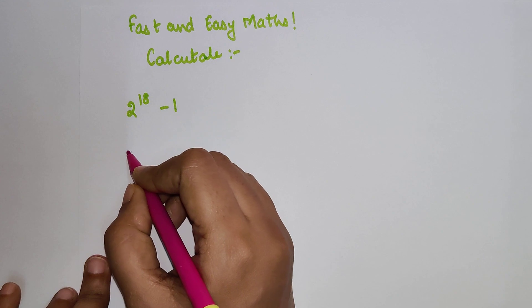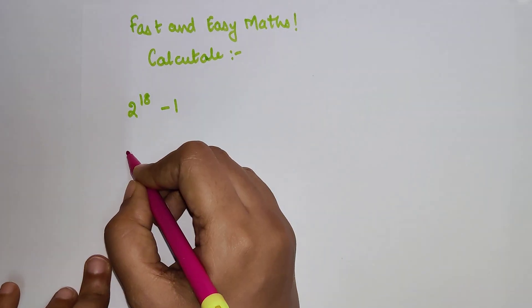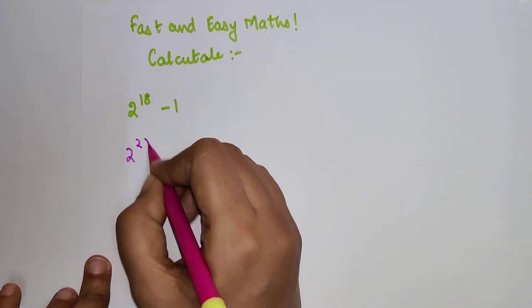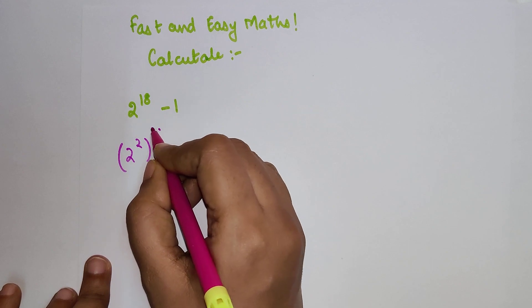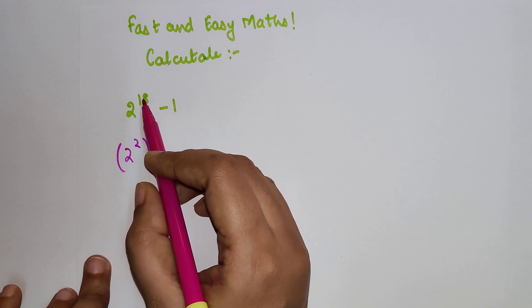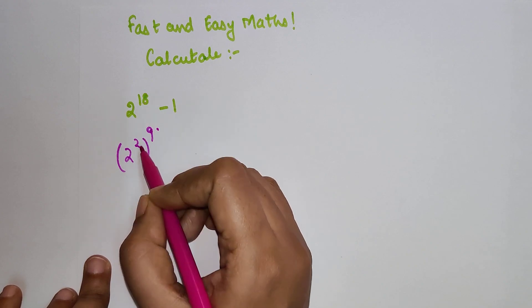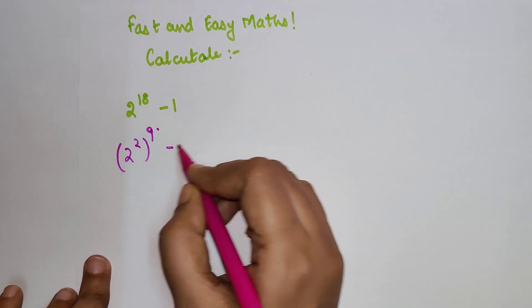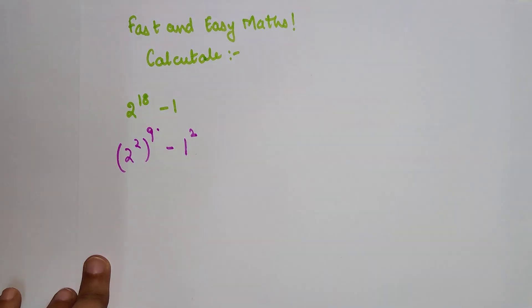So we can do this: (2^2)^9, correct? I can divide 18 by 9 and write 18 in terms of 2×9. And here also I can write this as nothing but 1^2.